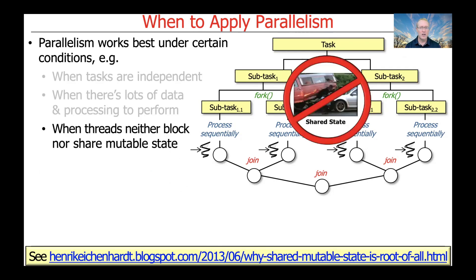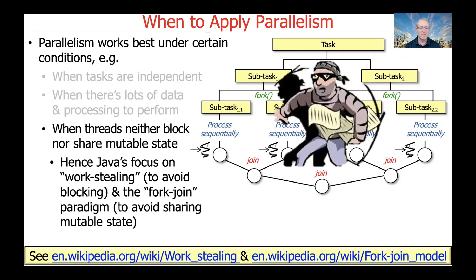Another condition under which parallelism works well is when threads neither block nor share mutable state. This is why Java has a focus on work stealing to avoid blocking — if one thread doesn't have anything to do, it goes ahead and steals work from another thread. And the fork-join paradigm involves avoiding the sharing of mutable state by partitioning things in a way where they don't have to be synchronized, so everything can be independent.